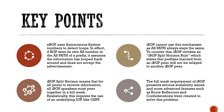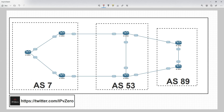Let's look at some configurations and examples and draw this out. First let's discuss the eBGP loop prevention mechanism. Looking at the topology, we've got three different autonomous system numbers. Router 6 has a loopback configured on it and we're going to advertise that into BGP, so it will propagate out to its peers.